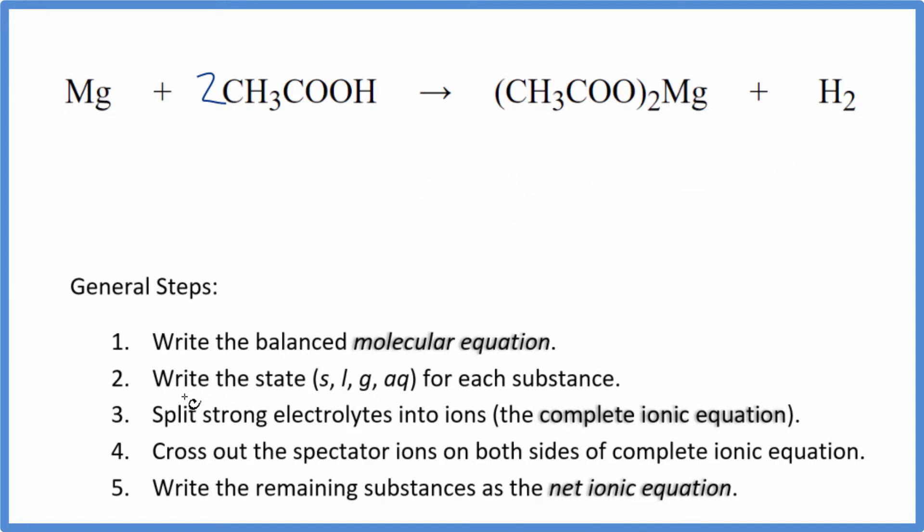Now we can write the states for each substance. Magnesium, that's a metal, so we're just going to write solid. It's a solid metal. This acetic acid here, it will dissolve. It's aqueous, but we do need to be careful. This is a special one. It's a weak acid. That means it's a weak electrolyte. So it'll dissolve, but it won't break apart into ions. We'll come back to that.